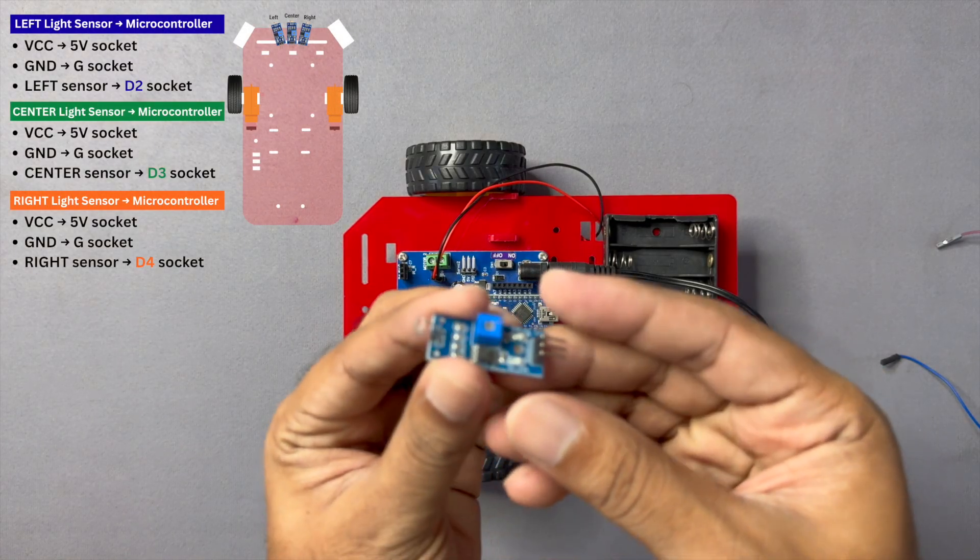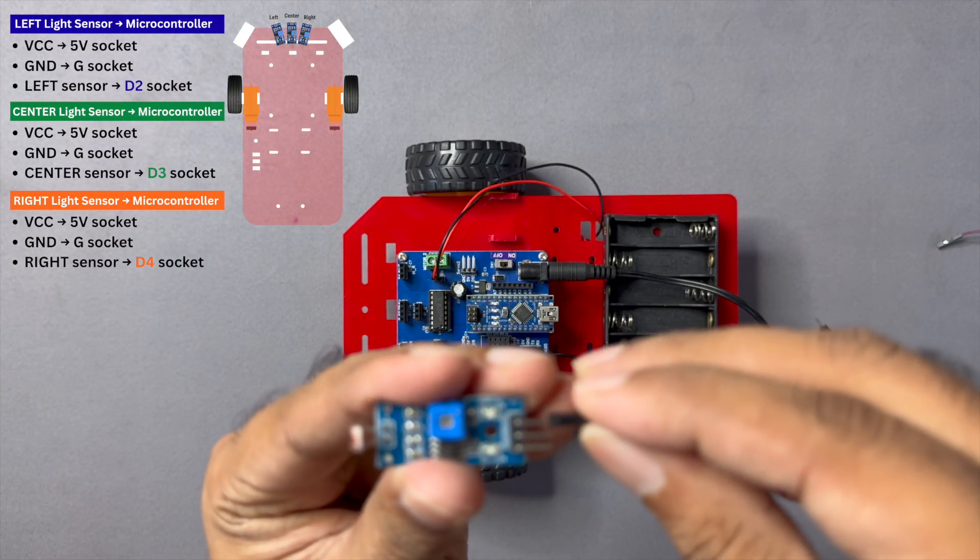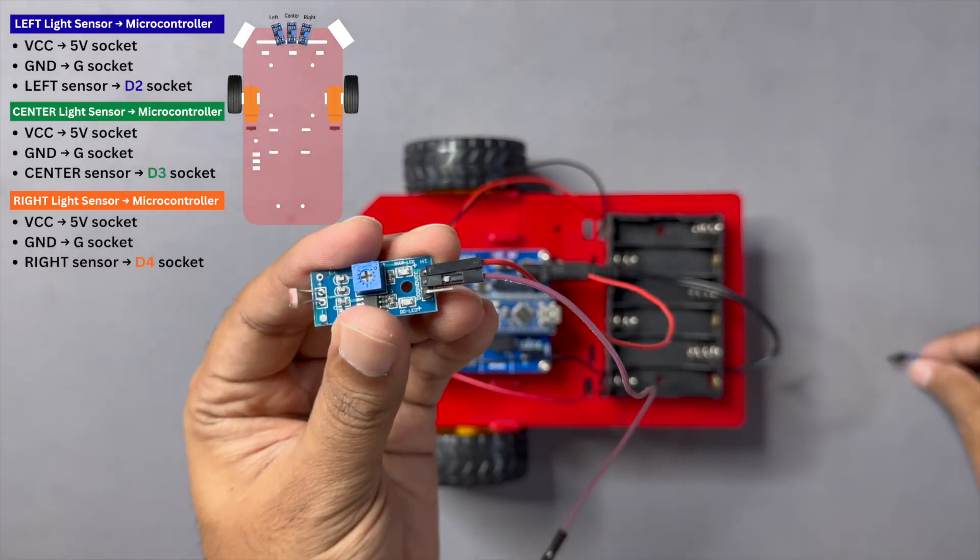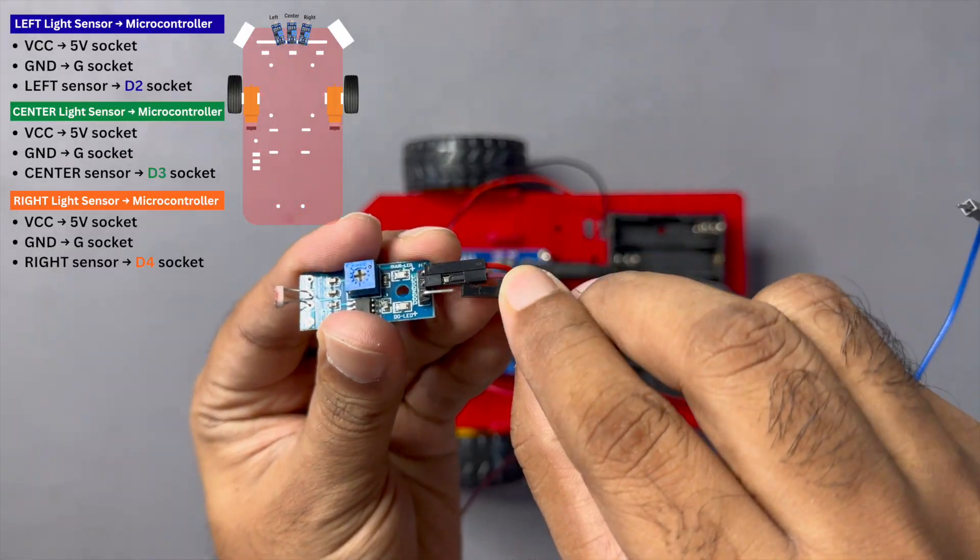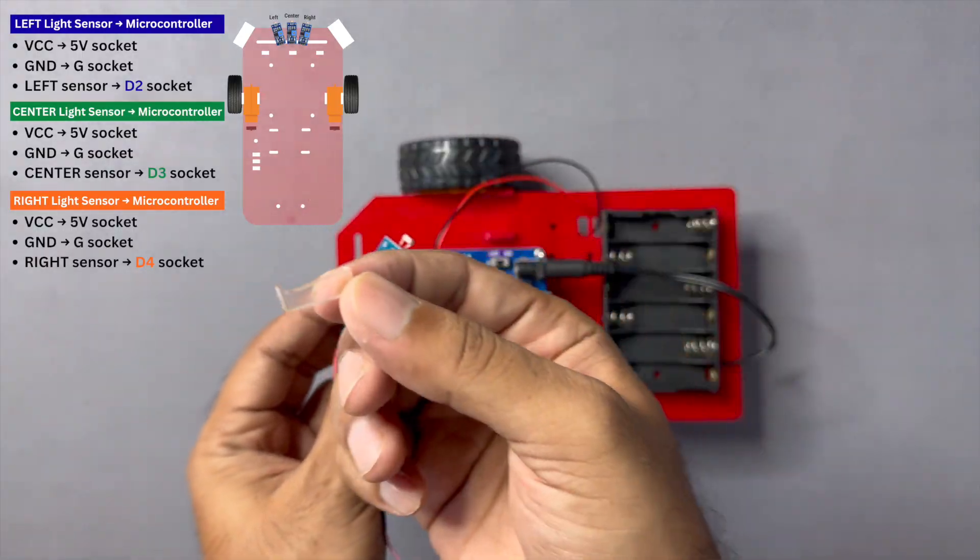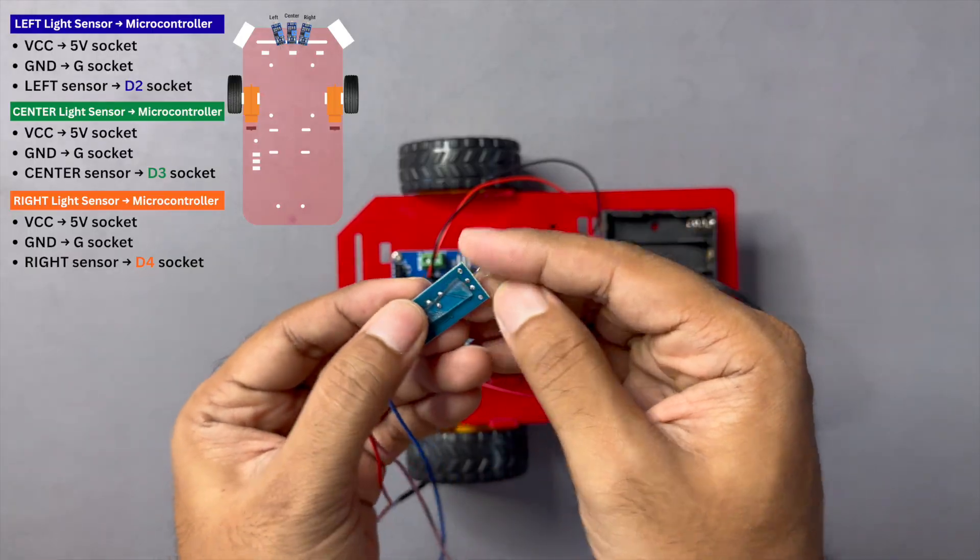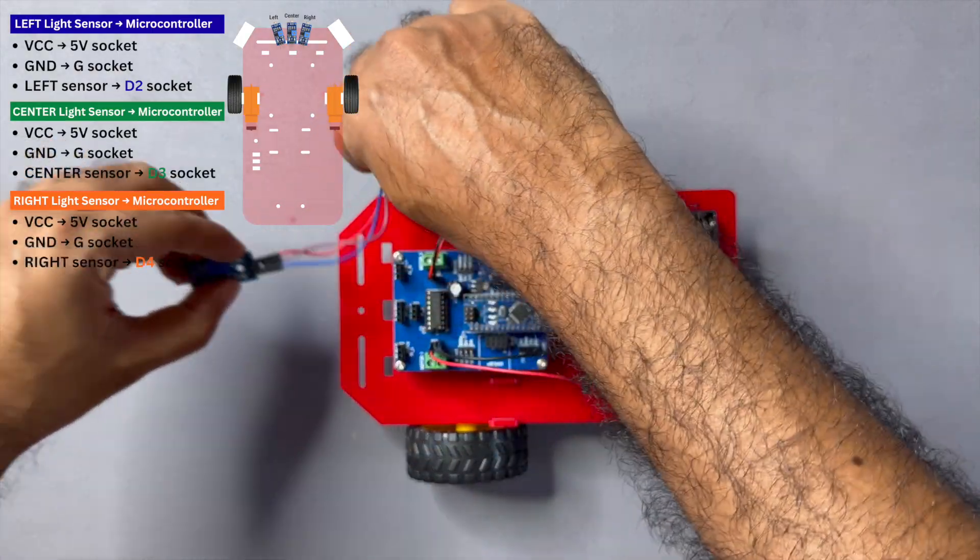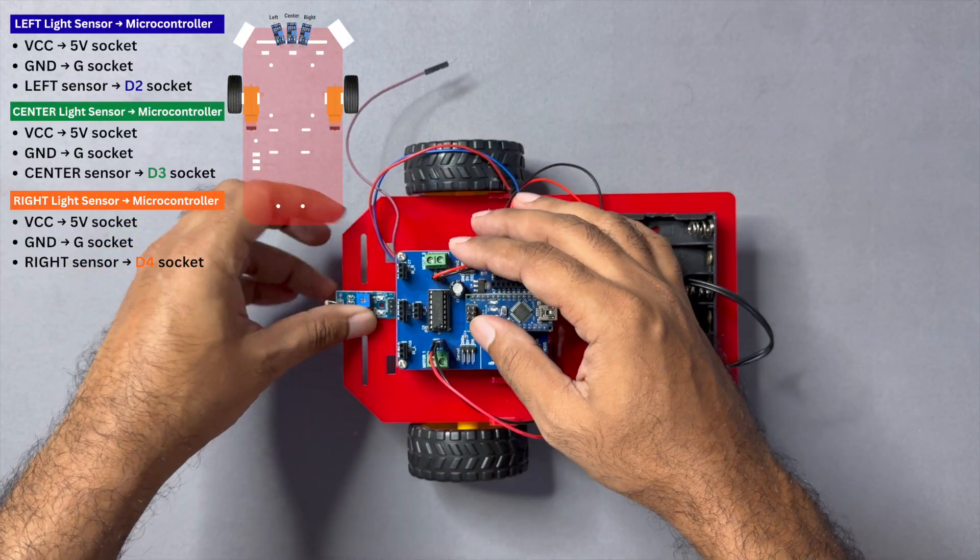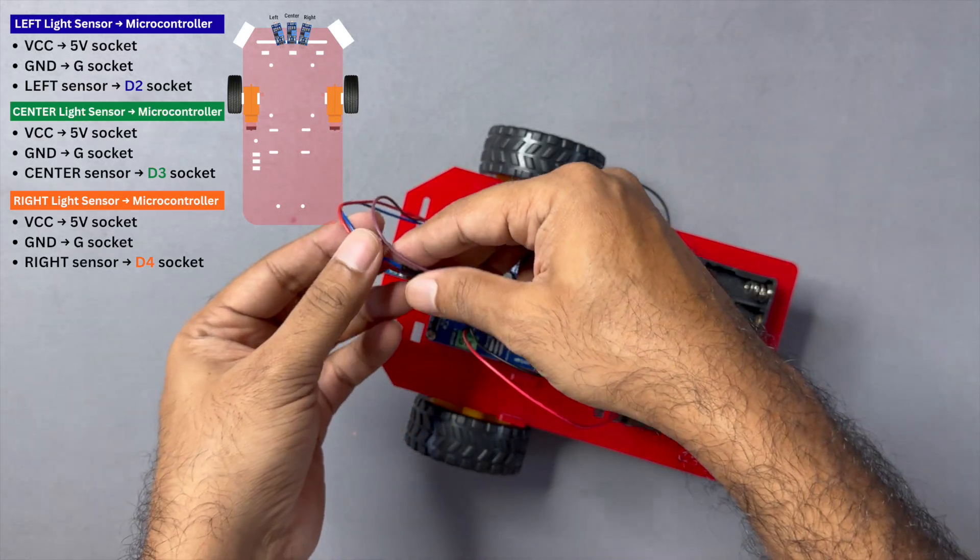Now, let's install the light sensors one by one. Take one of the light sensor modules, also called a photo resistor module, and connect jumper wires to its GND, 5V, and OUT pins. This will be your center sensor. Use double-sided tape to attach the sensor to the robot chassis as shown in the video. Route the wires neatly and connect the other ends of the jumper wires to the microcontroller board's 5V, GND, and D3 sockets.